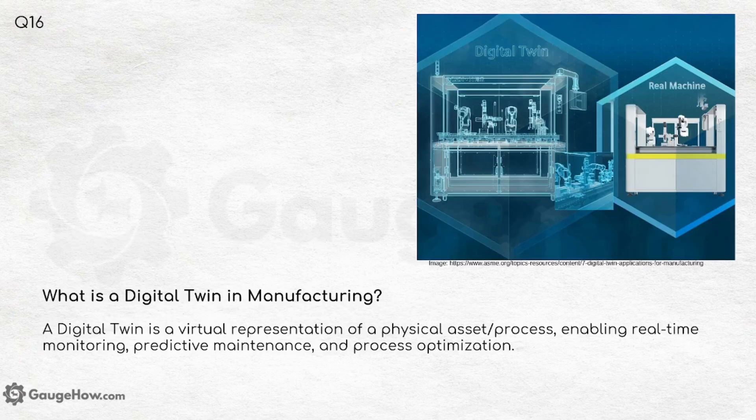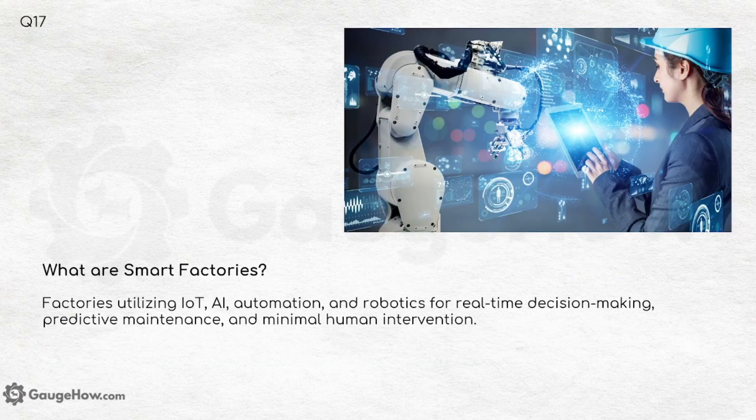What is a digital twin in manufacturing? A digital twin is a virtual representation of a physical asset or process, enabling real-time monitoring, predictive maintenance and process optimization.